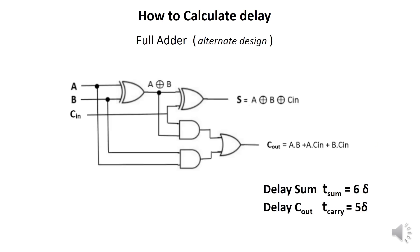There is also another alternate design circuit for the Full Adder. In this case, the delays are a little higher. The delay of the sum is 6δ, because the longest path has two Exclusive OR gates in series: 3 + 3 = 6δ. The delay of the carry is 5δ, because the longest path has one Exclusive OR gate, one NAND, and one OR — total 5δ.